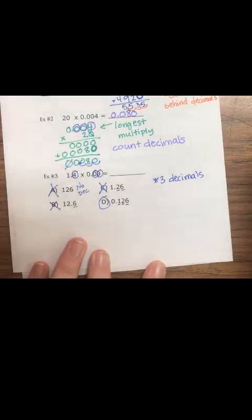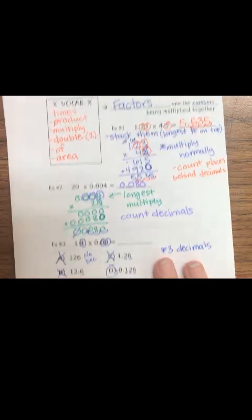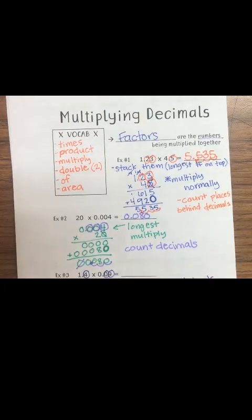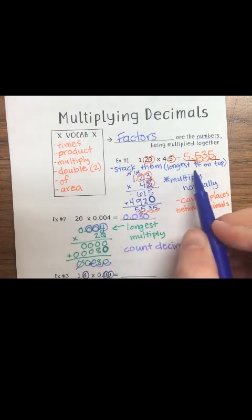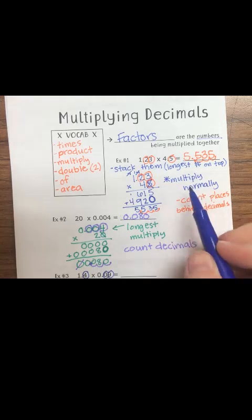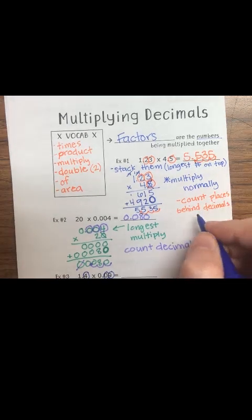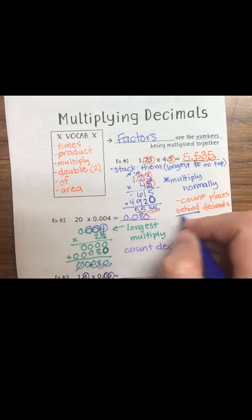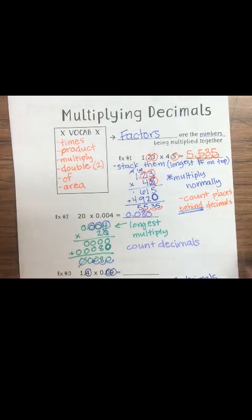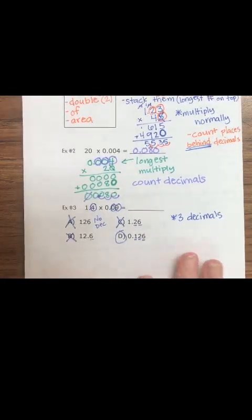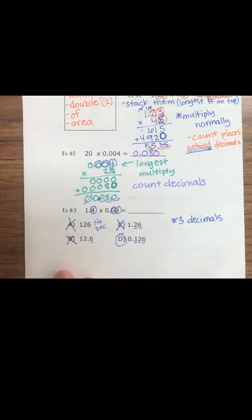I didn't even have to multiply! So to summarize: stack your numbers with the longest on top, multiply like normal, and then at the end count the decimal places behind the decimal in both factors — that tells you how many decimal places are in your answer. Make sure you take notes and then you can get started on your worksheet.